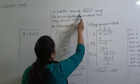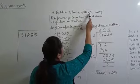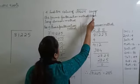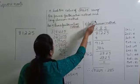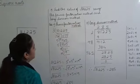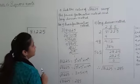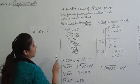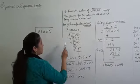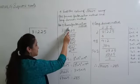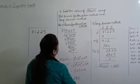Find the value of the square root of 81,225 using the prime factorization method and the long division method. We have two ways of finding the square root of a number. One is the prime factorization method, which is known to you, and the other is the long division method.